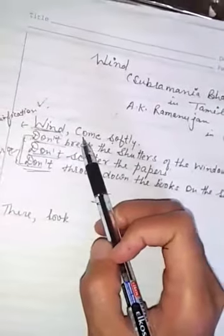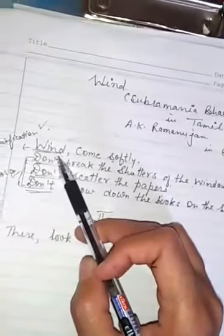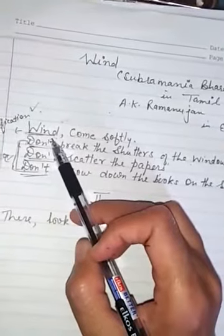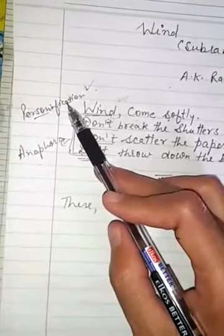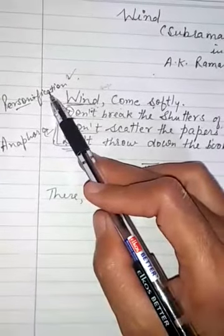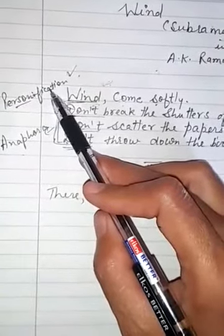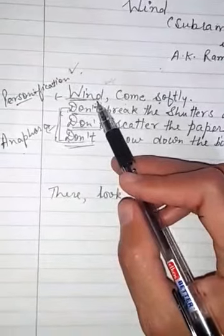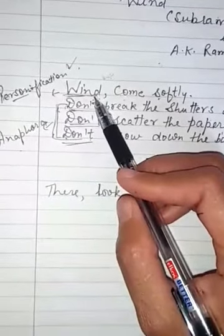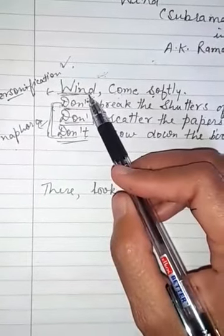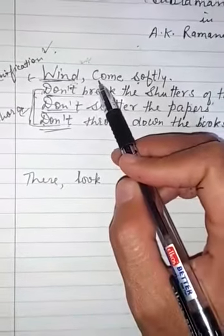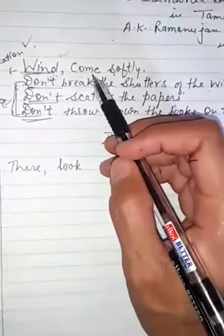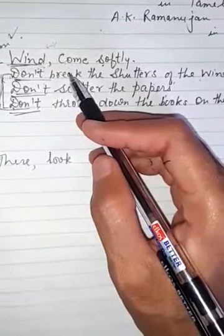In the very first line you see that the poet addressed inanimate things or other creatures like a person - that is called personification. Personification is a poetic device when any inanimate thing or other creature is treated or addressed as a person. So in the first line, wind is addressed like a person. It is called personification.